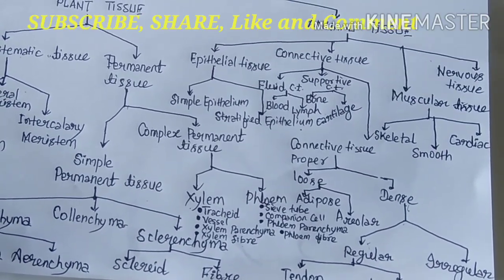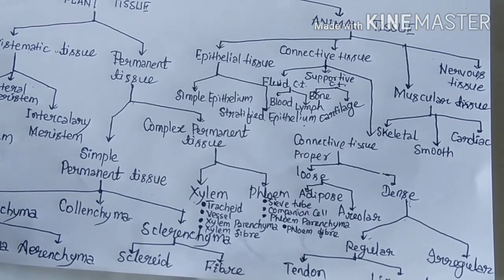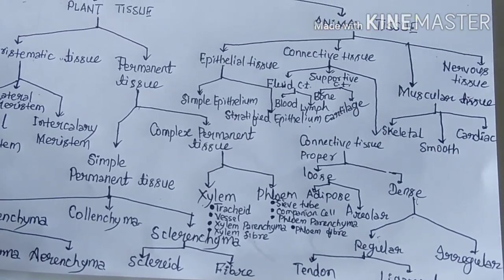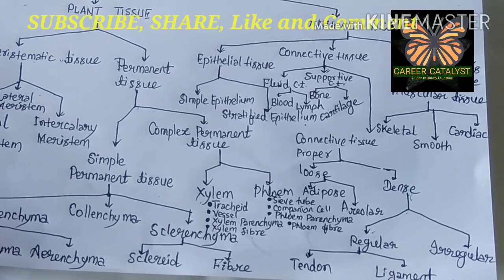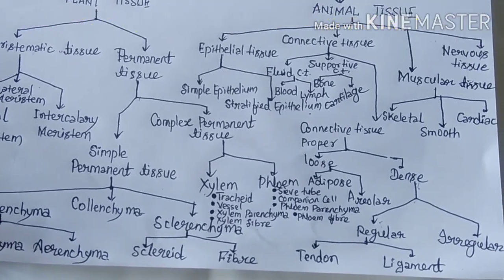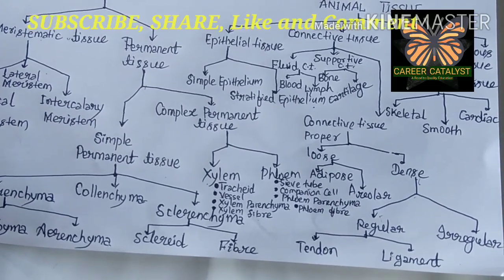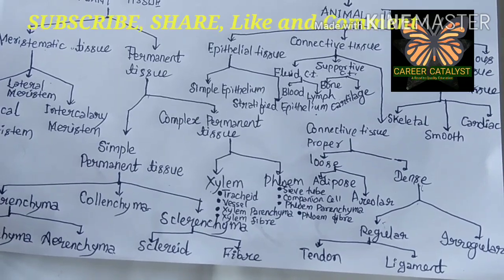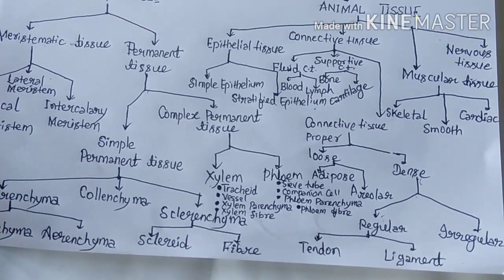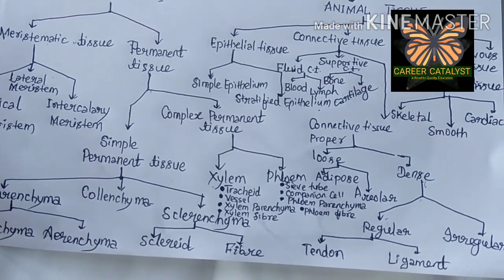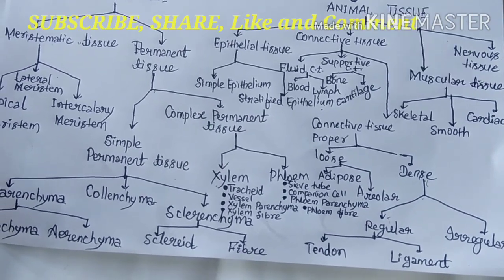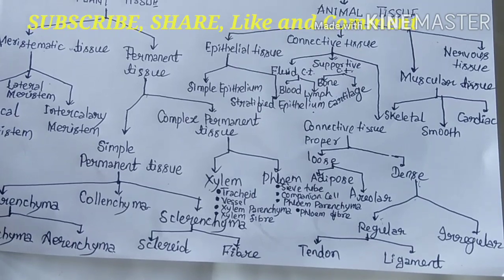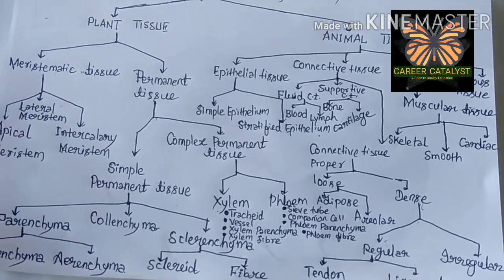Adipose tissue is a group of fat-storing cells having similar structure and function — its job is to store fat. Fat acts as an insulating unit for our body and keeps us warmer in cold conditions. Adipose tissue is found wherever fat accumulation occurs. Areolar tissue is found in bone marrow, around nerves and blood vessels, and between skin and muscles. Both areolar and adipose tissues are loosely packed.